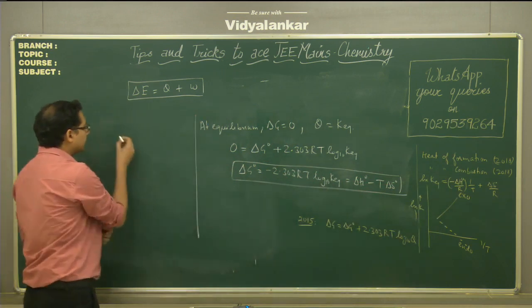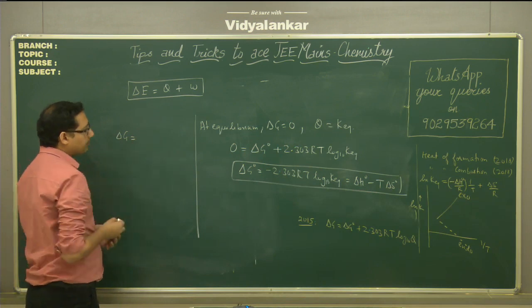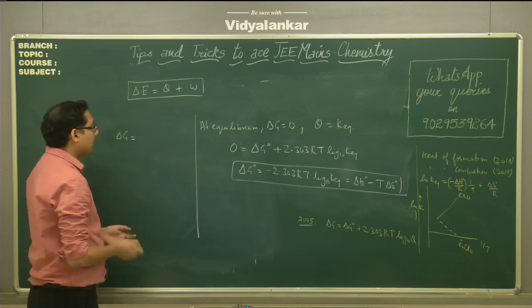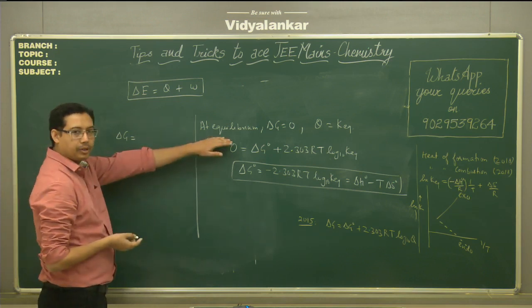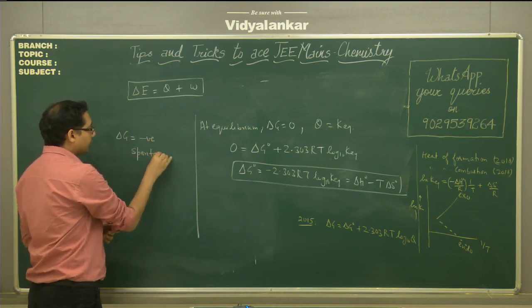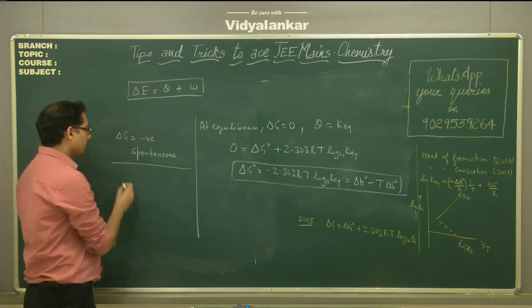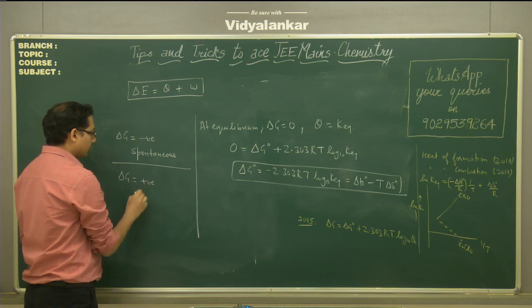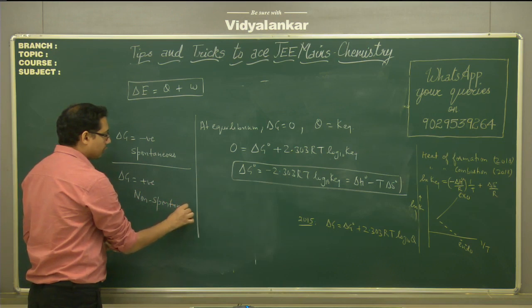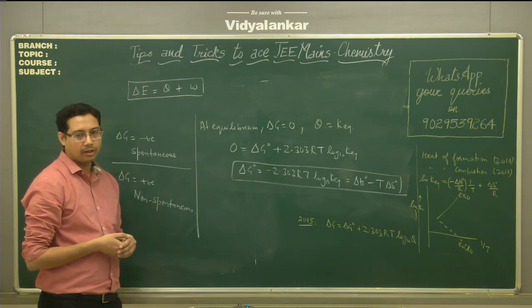Delta G's significance: it indicates the maximum amount of useful work done by the system. If ΔG = 0, the system is at equilibrium. If ΔG is negative, the reaction is spontaneous — meaning the reaction is feasible. If ΔG is positive, the reaction is non-spontaneous — meaning the reaction is not feasible at the given conditions.